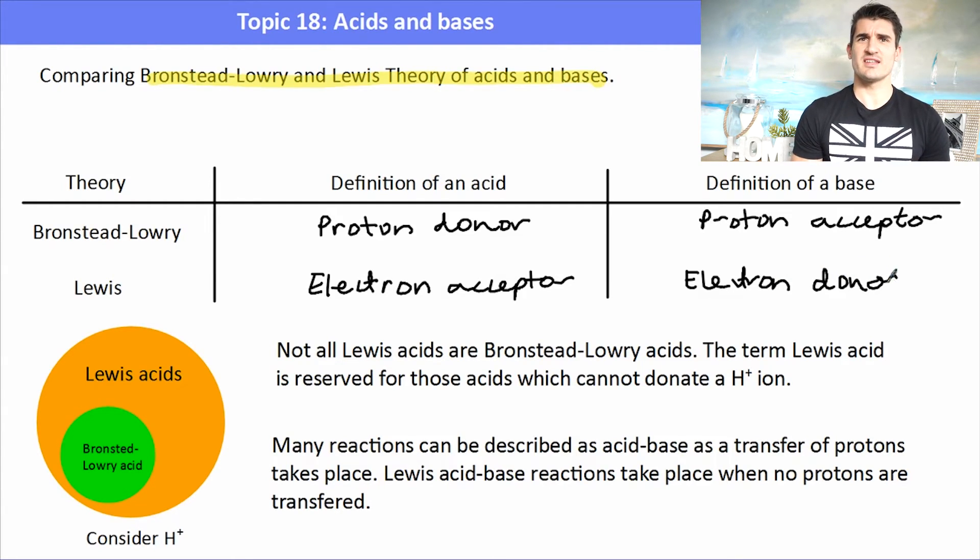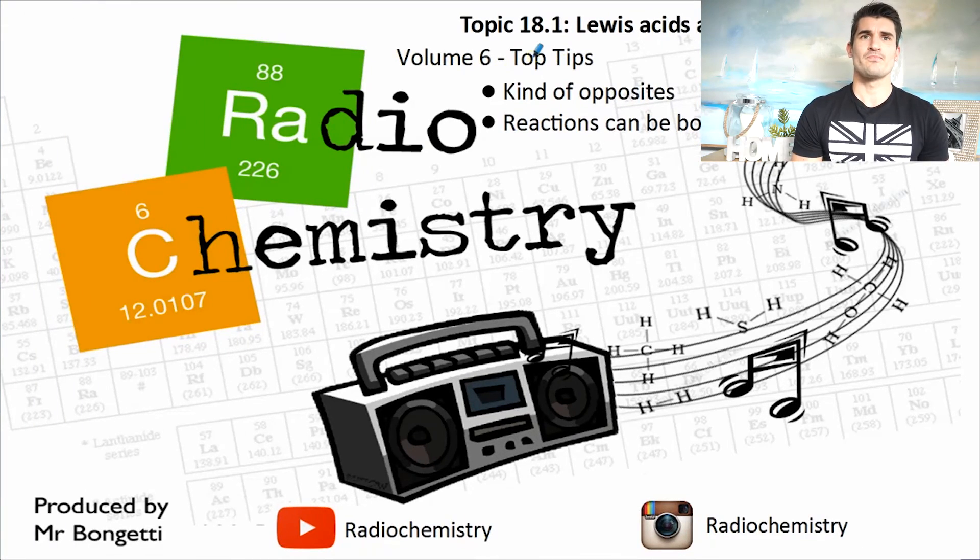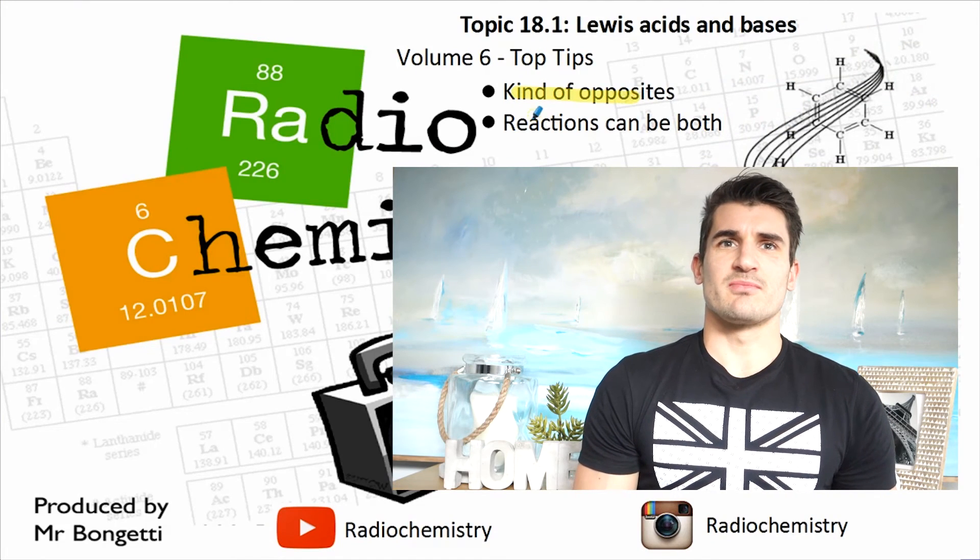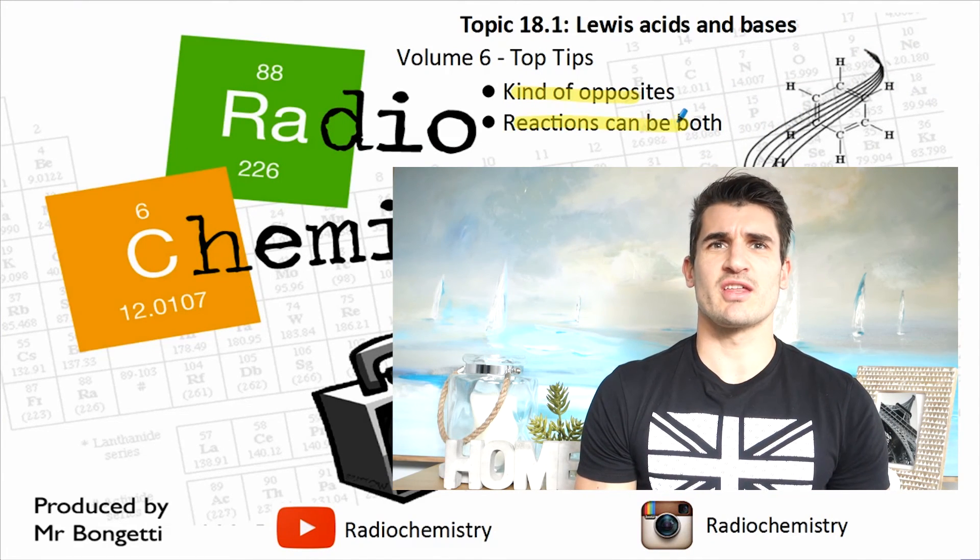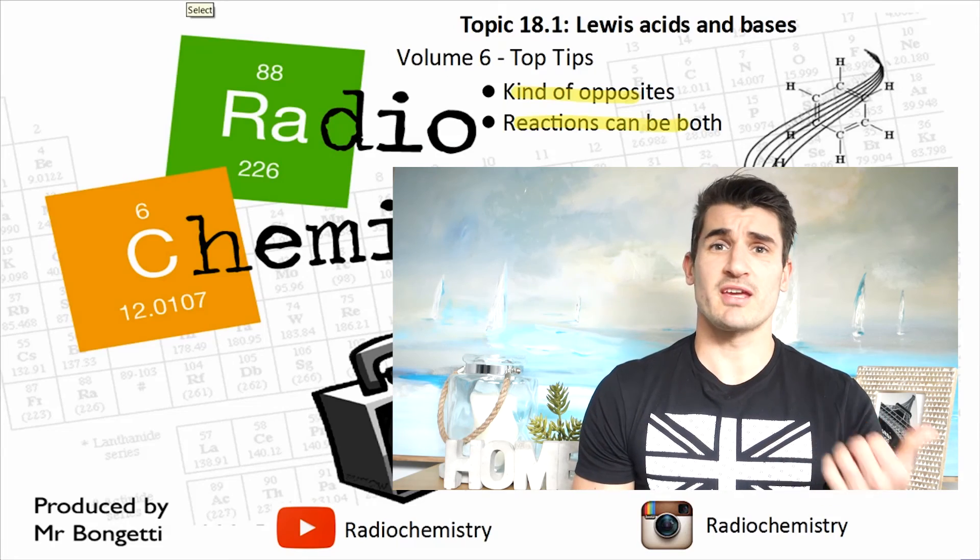Not all Lewis acids are Bronsted-Lowry acids. The term Lewis acid is basically reserved for those things that act as acids which don't actually have a hydrogen ion to donate. Many reactions can be described as acid and base as a transfer of protons takes place, but in Lewis acid-base reactions there's often no transfer of protons occurring. So volume six, some top tips: remember that they're kind of opposites to each other, and reactions can be both. They can be both Bronsted-Lowry and they can also be Lewis, or they could be just one or the other.